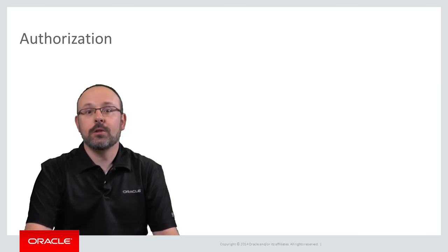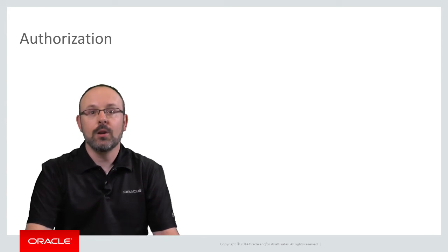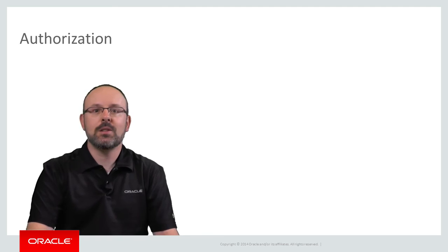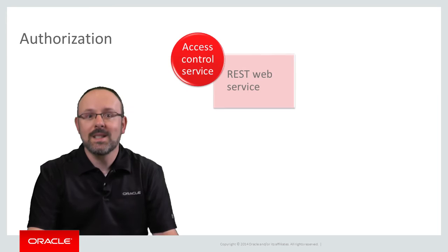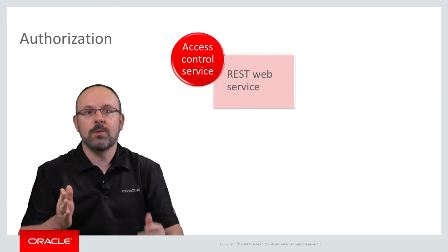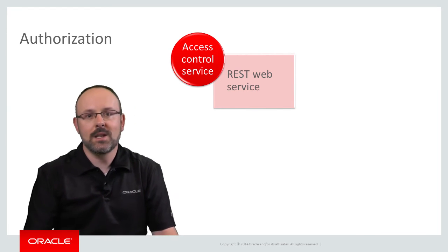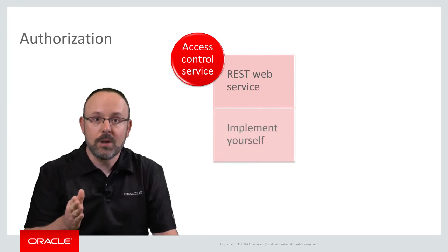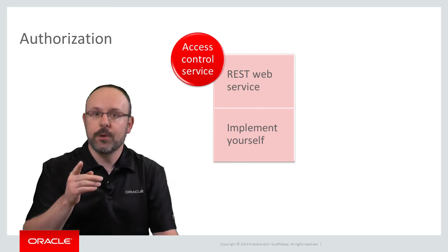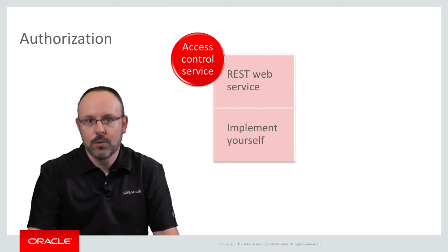Let's now focus on authorization. In MAF applications, authorization can take both the roles and privileges of a user into account. To obtain those roles and privileges, the application must interact with something we call the Access Control Service — essentially a REST web service whose signature has been set by Oracle. When you configure authorization for your application, you simply provide the URL to that service. Please note, you must implement the Access Control Service yourself.